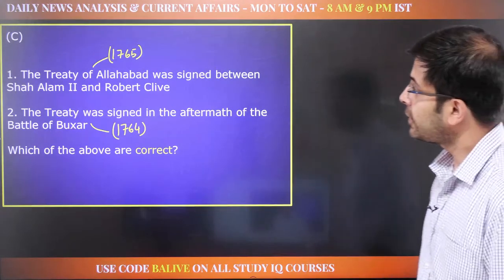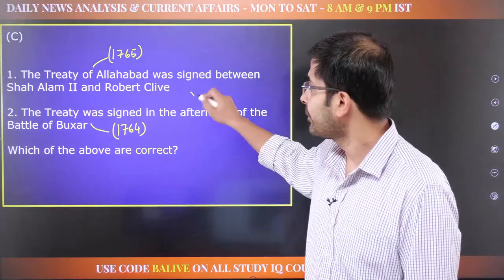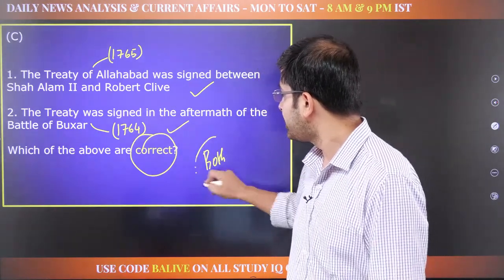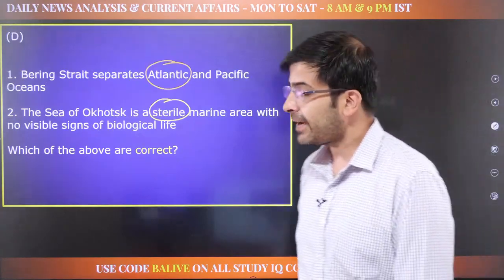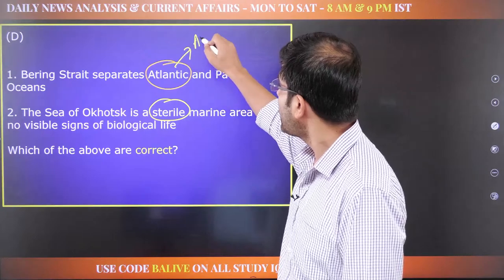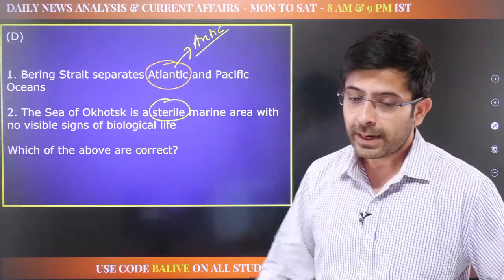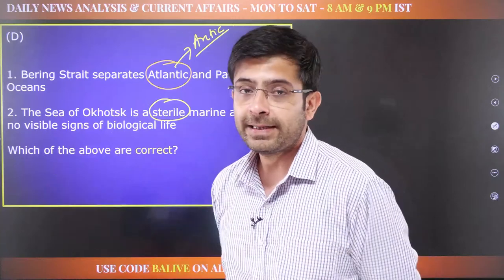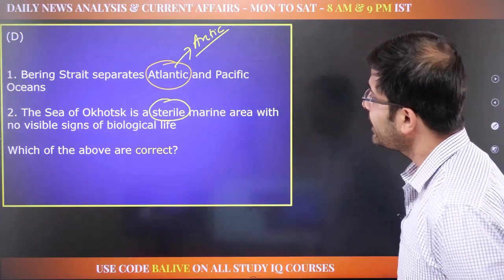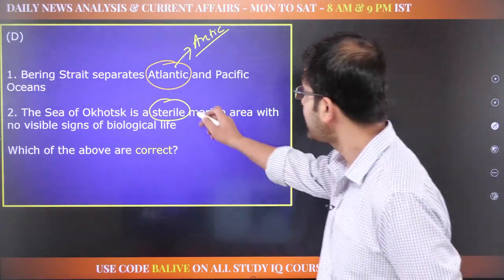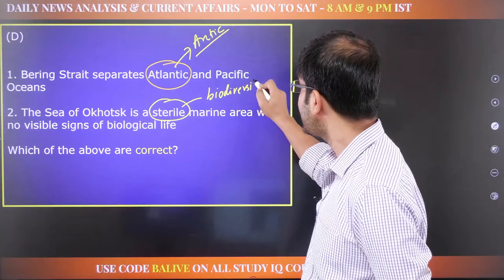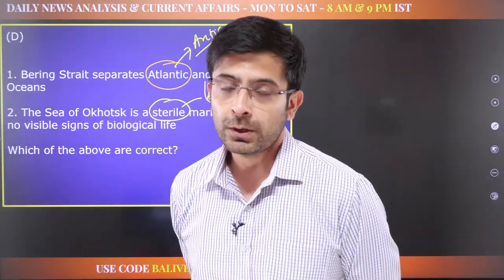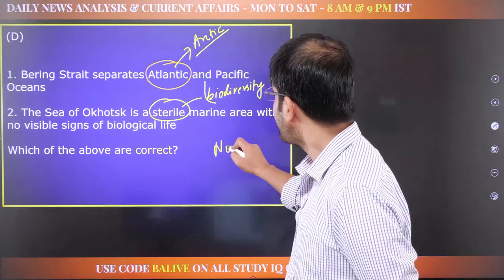The Treaty of Allahabad was signed between Shah Alam II and Robert Clive — correct. The treaty was signed in the aftermath of the Battle of Buxar — also correct. For the Bering Strait question: it separates Arctic and Pacific oceans, not Atlantic and Pacific. Geographically it separates Russia and the United States. The Sea of Okhotsk is biodiversity-rich, not sterile. None of these statements are correct.